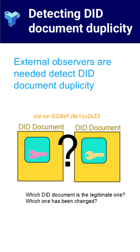Having a way to observe changes to a DID document from the outside by disinterested parties who will not collude to enable DID document duplicity is essential for maintaining trust in decentralized identity systems. Since the DID controller can update the document, independent verification — whether through public ledgers, hash commitments, watcher networks, or other methods — helps ensure that changes are transparent and detectable.